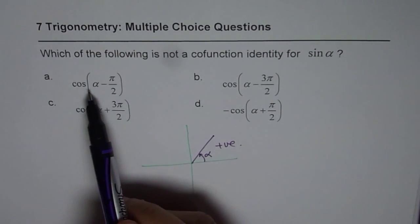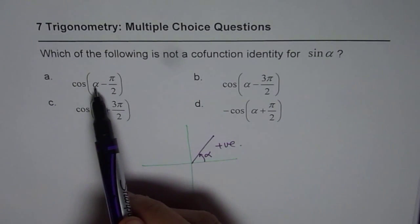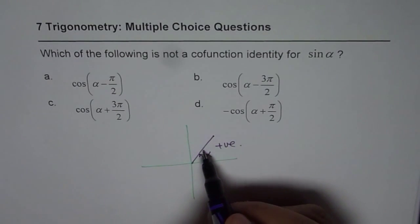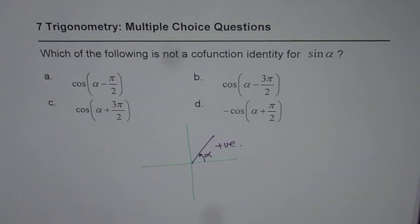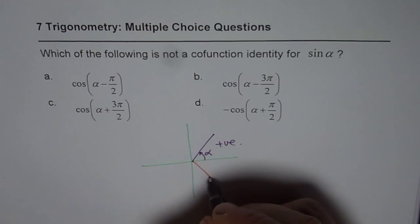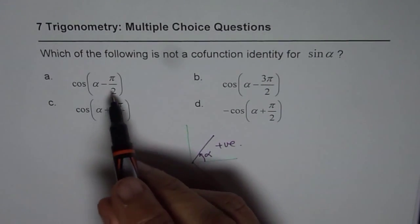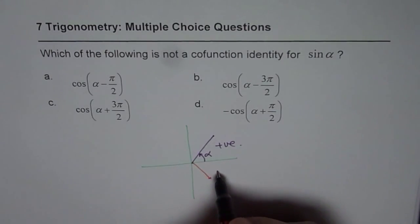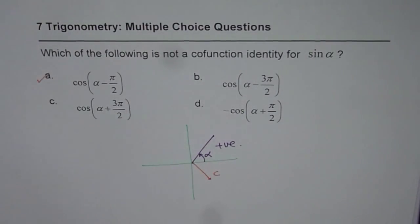Let us look into these. Cos(α - π/2). If I say cos(α - π/2), in that case, we land up in this quadrant. Now, minus π/2 makes it a cofunction identity. Cos is positive here, so this is a cofunction identity.